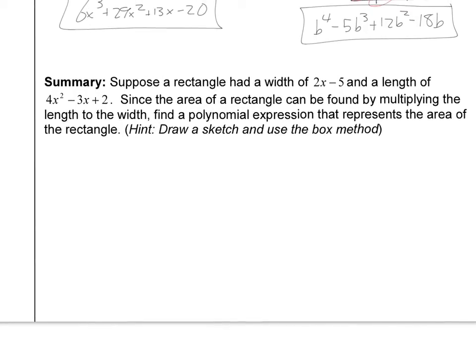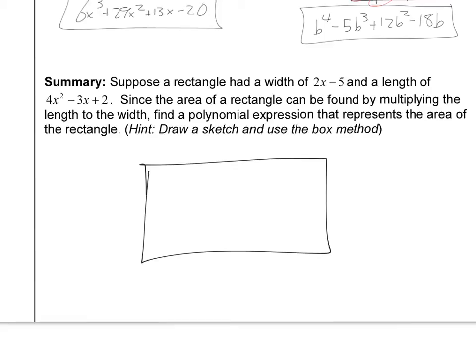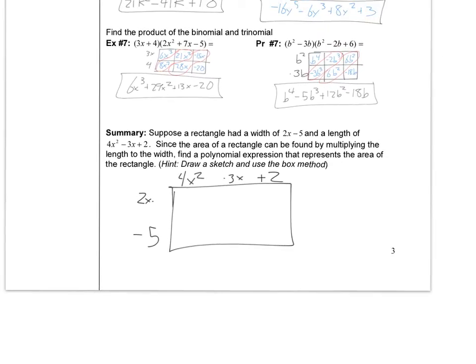Lastly, try this one on your own. Suppose a rectangle has a width of 2X minus 5 and a length of 4X squared minus 3X plus 2. Since the area of a rectangle is found by multiplying length times width, find a polynomial expression that represents the area of the rectangle. Draw a sketch and use the box method — put 2X minus 5 on one side and 4X squared minus 3X plus 2 on the other. I'll look for it on your notes. See you guys next video.